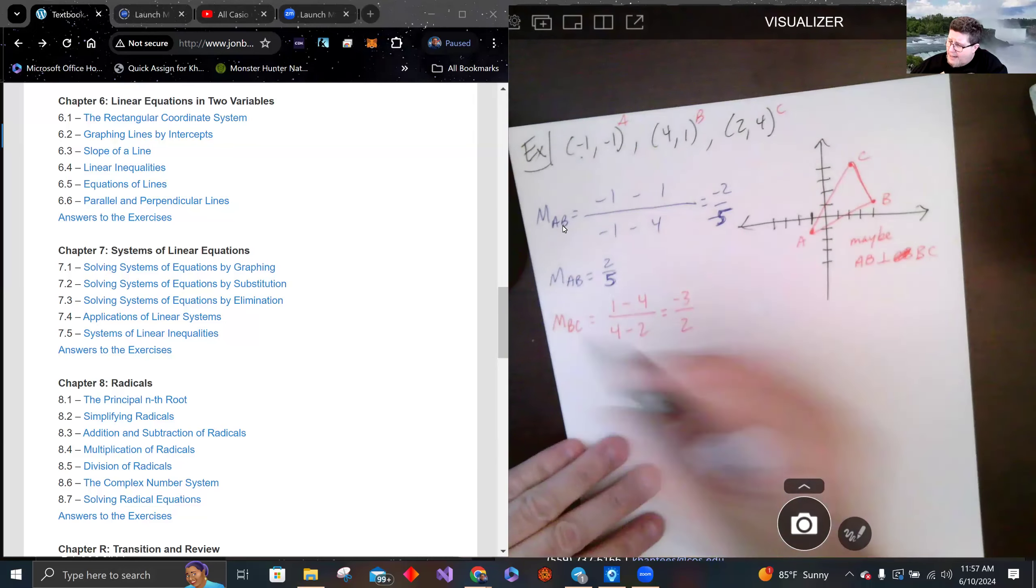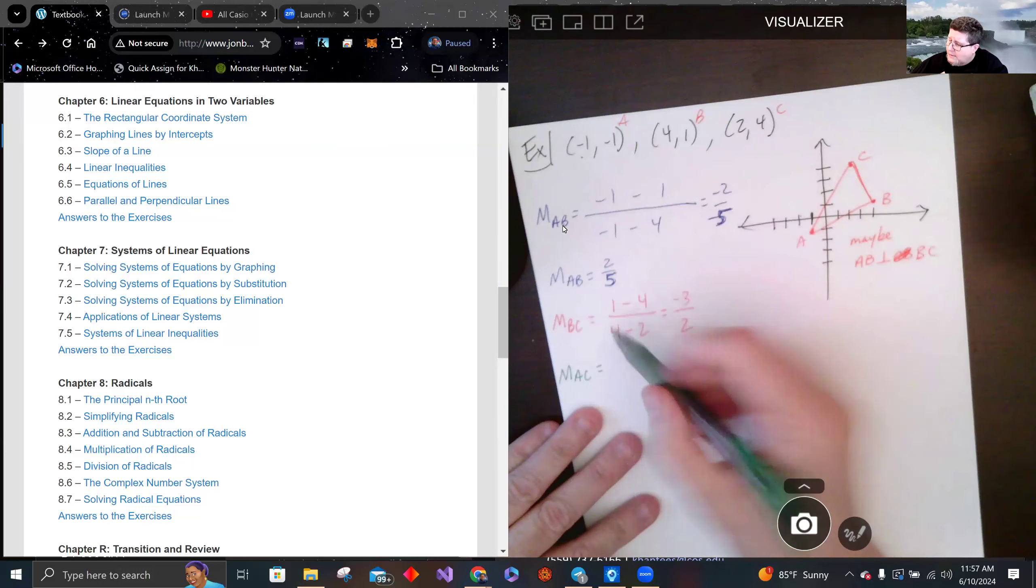And finally m_AC: (-1-4)/(-1-2), this is -5/-3, or 5/3.